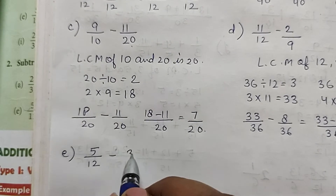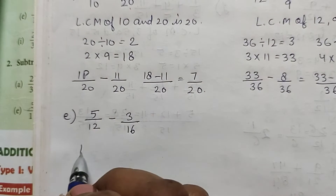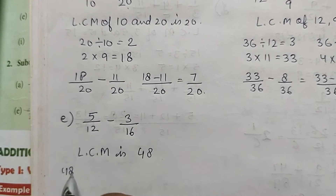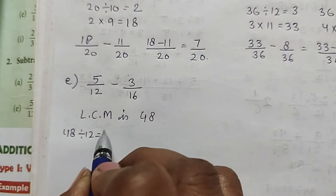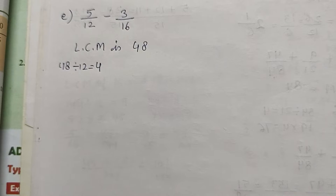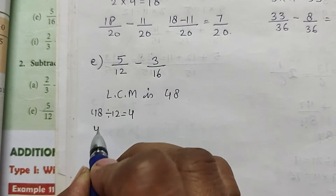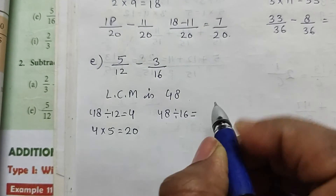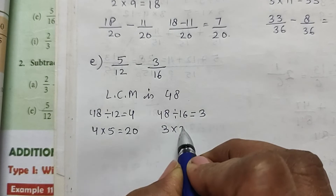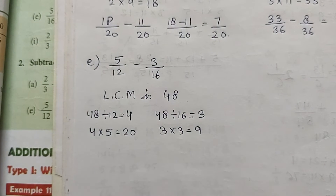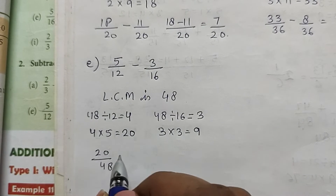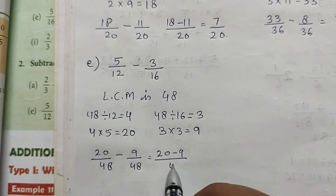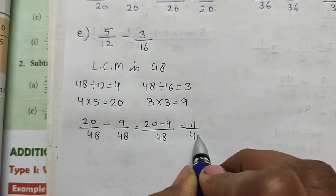Part e: 5/12 minus 3/16. The LCM is 48. 48 divided by 12 is 4, and 4 into 5 is 20. 48 divided by 16 is 3, and 3 into 3 is 9. So the new fractions are 20/48 minus 9/48, which equals 11/48.